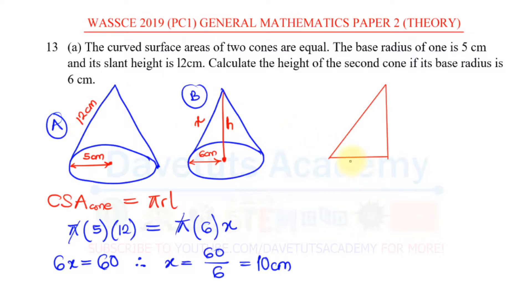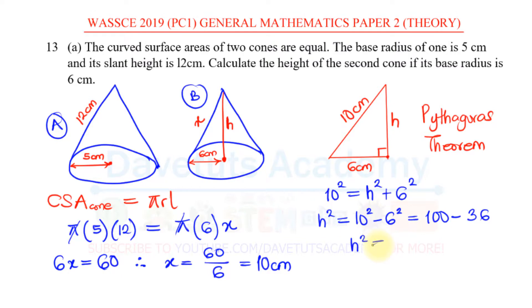So this base is 6 centimeters, this height is what we are looking for and we just got this slant height to be 10 centimeters. Already you can see that this is a right angle triangle and we can use the Pythagorean theorem to actually evaluate the value of h. From the Pythagorean theorem we know that the square of the hypotenuse is equal to the square of the opposite plus the square of the adjacent. So h squared will be 10 squared minus 6 squared. 10 raised to power 2 is 100 minus 6 raised to power 2 is 36 so h squared is equal to 100 minus 36 is 64 so that h will be the square root of 64 and the square root of 64 is 8 centimeters so the height of the second cone is 8 centimeters.